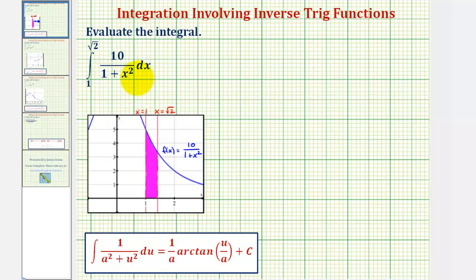We want to evaluate the definite integral. The graph of the integrand function is graphed here in blue. Then we have the vertical lines x equals one and x equals square root two, which are the limits of integration. And since the integrand function is non-negative over this closed interval, the value of this definite integral will be the area of the shaded region.